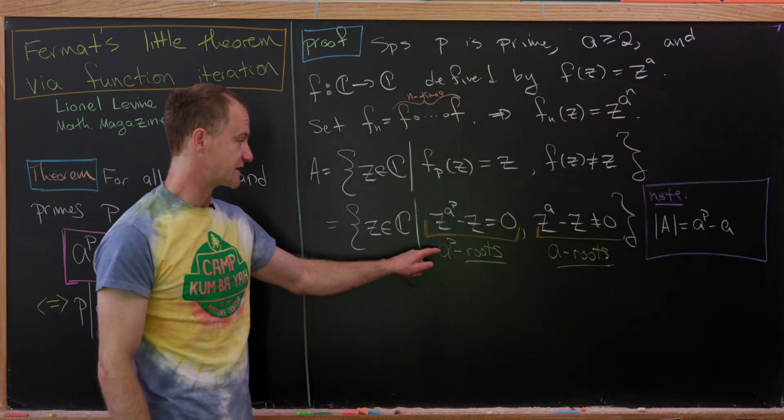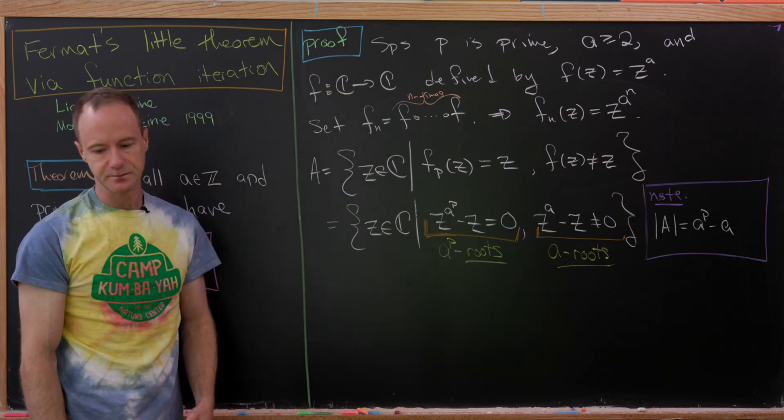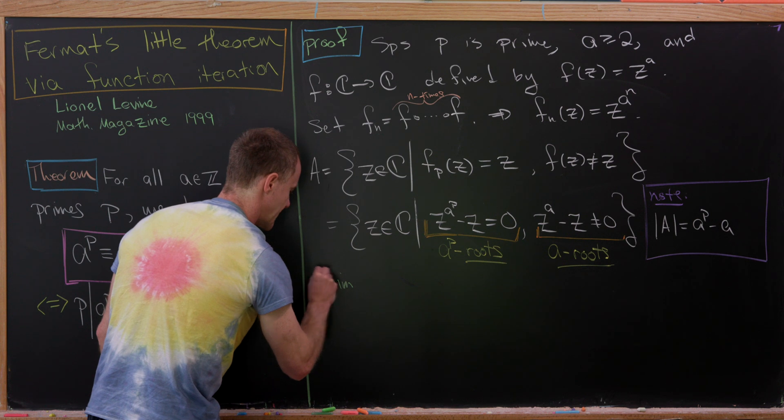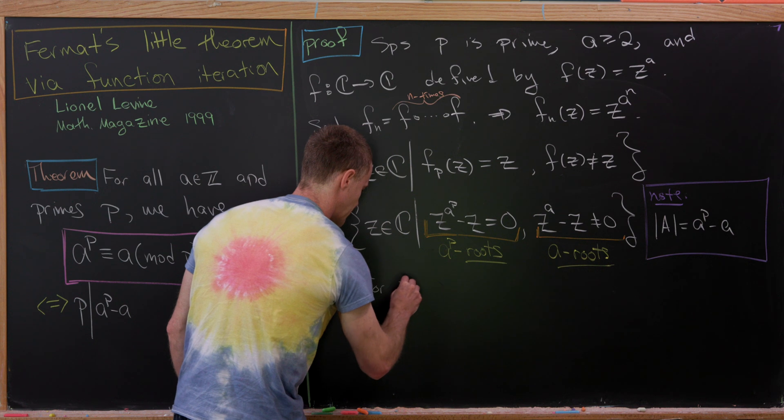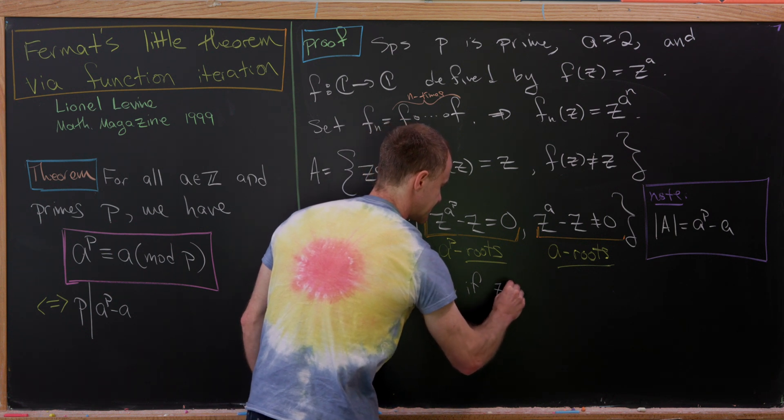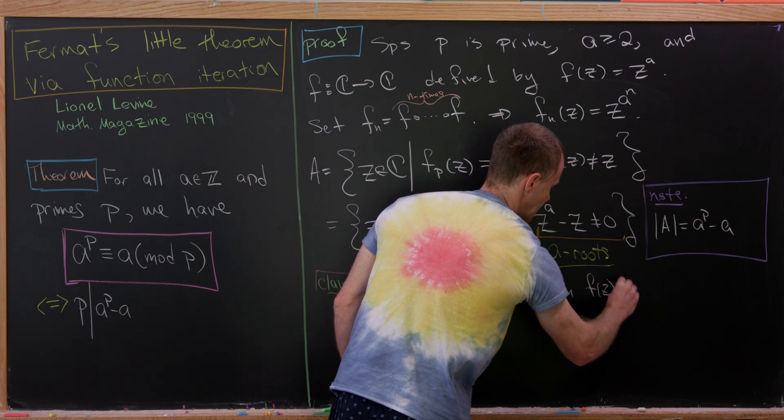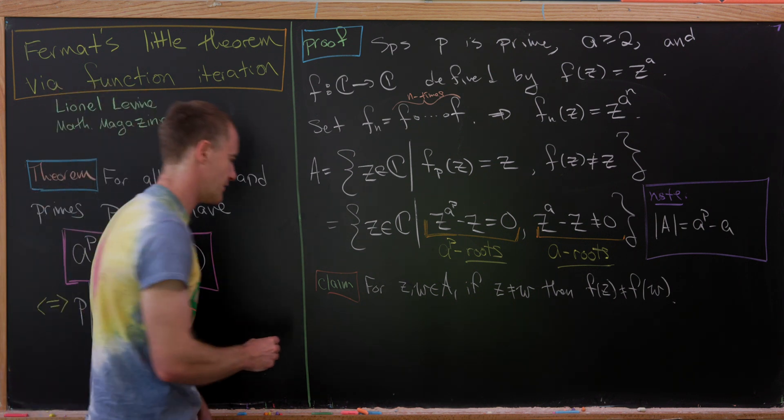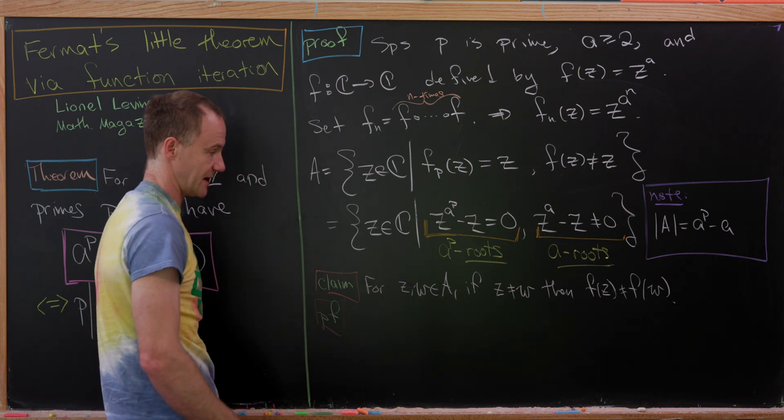That'll actually be useful in the final step. So I'll just put note. We have the size of A is equal to A to the P minus A. Again, because we're taking all of the roots here, but we're taking away the roots that are roots of that equation. Now we're going to make our first of two claims. And this first one will follow very quickly. And that says this. So for Z and W inside of A, if Z is not equal to W, then F of Z is not equal to F of W.